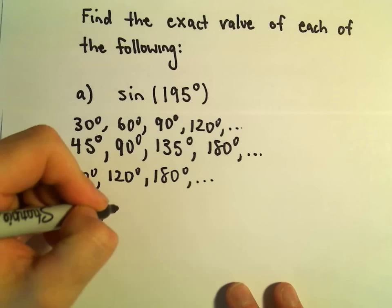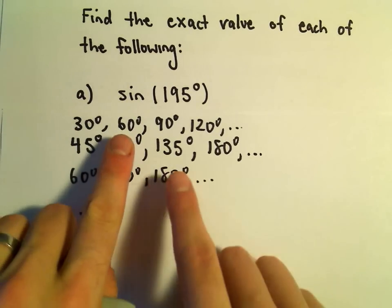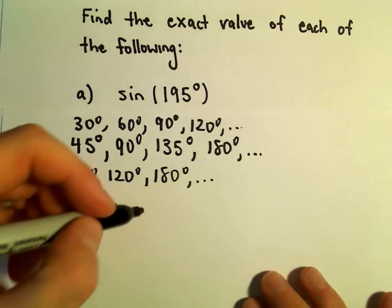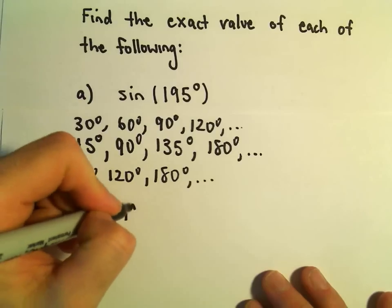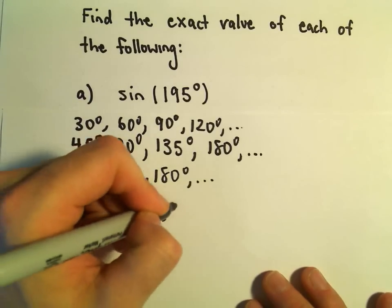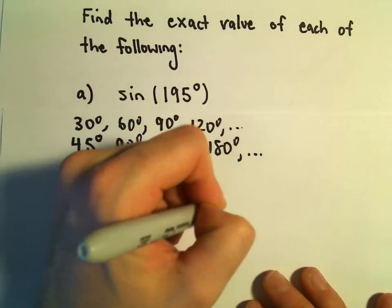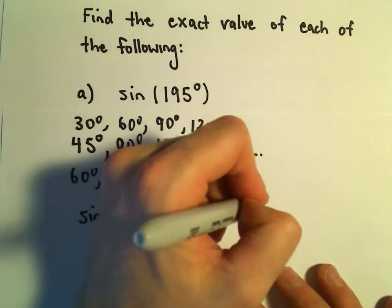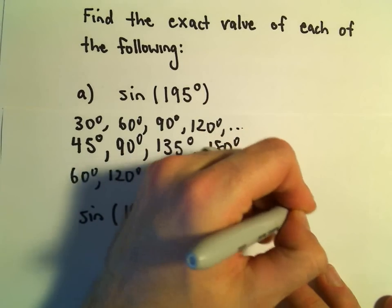Well, there's definitely more than one way to do this, but certainly it looks like we could use 60 degrees and 135 degrees. So sin(195°) is the same thing - that's going to be 60° + 135°.